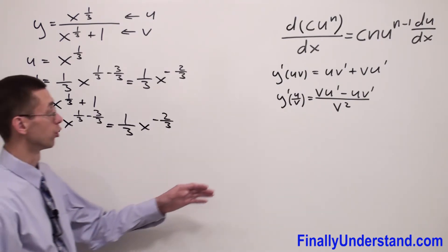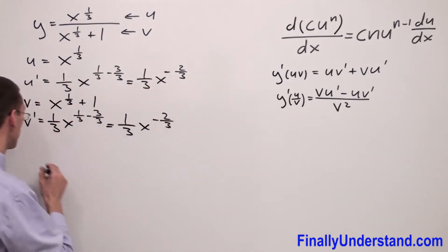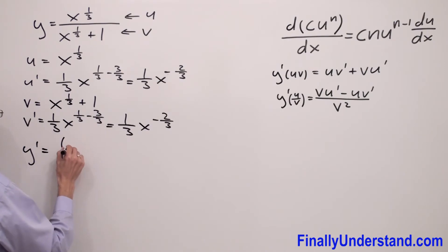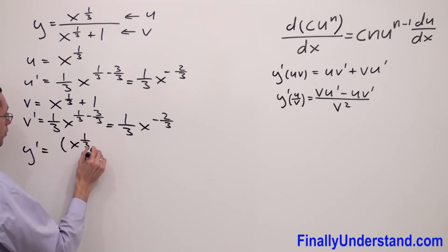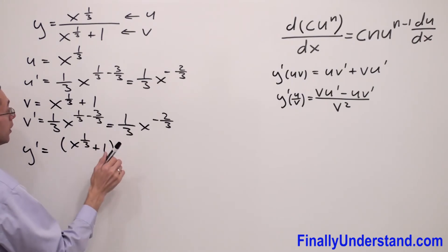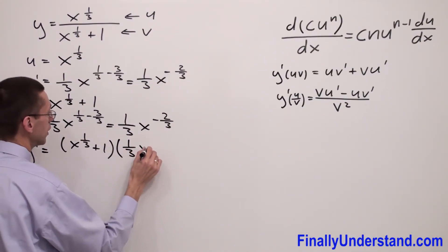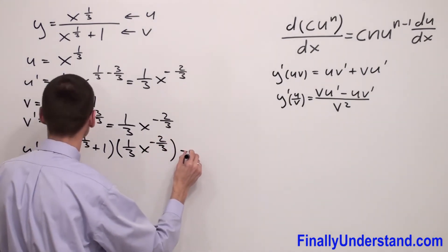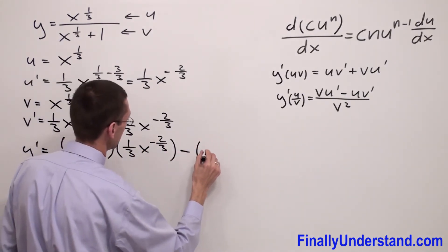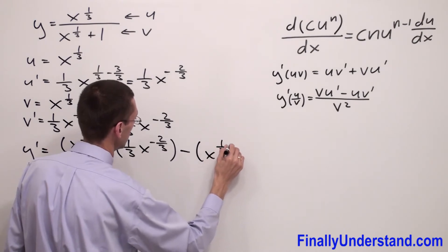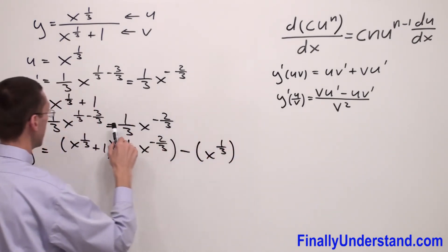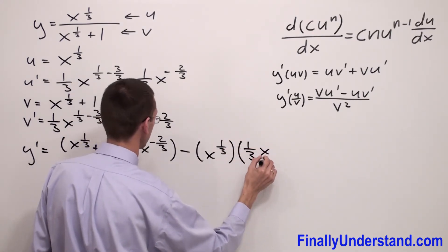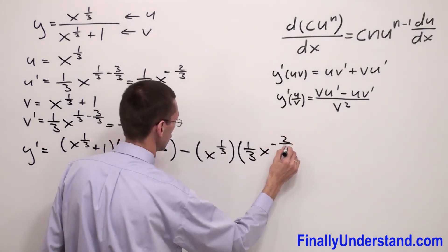Next, we're supposed to use the quotient rule formula. So, y prime is equal to v — which is x to the power 1 third plus 1 — times 1 third x to the negative 2 thirds, minus u — which is x to the 1 third — times v prime, which is 1 third x to the power negative 2 thirds.